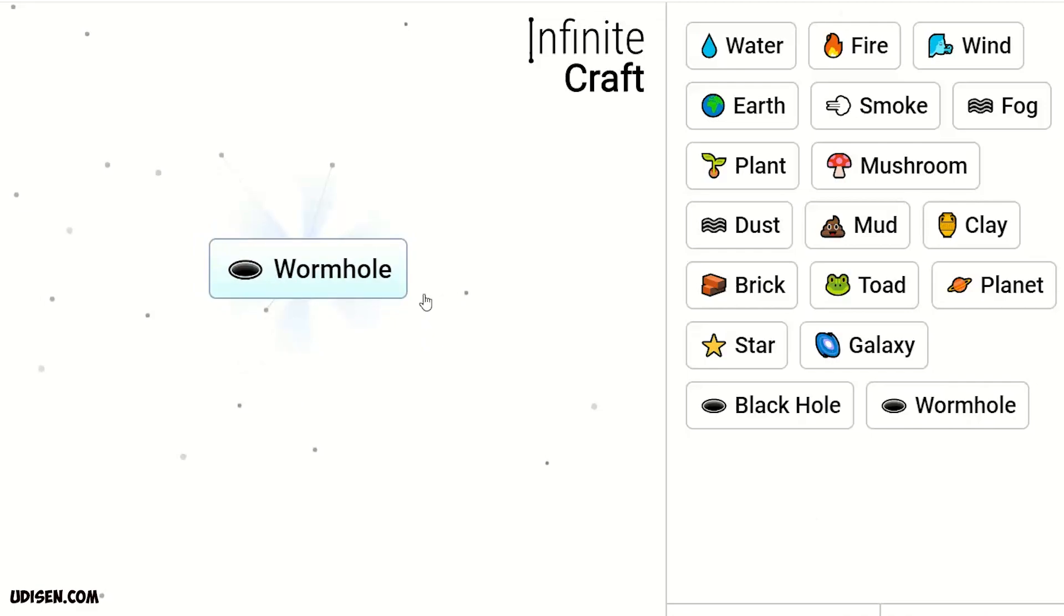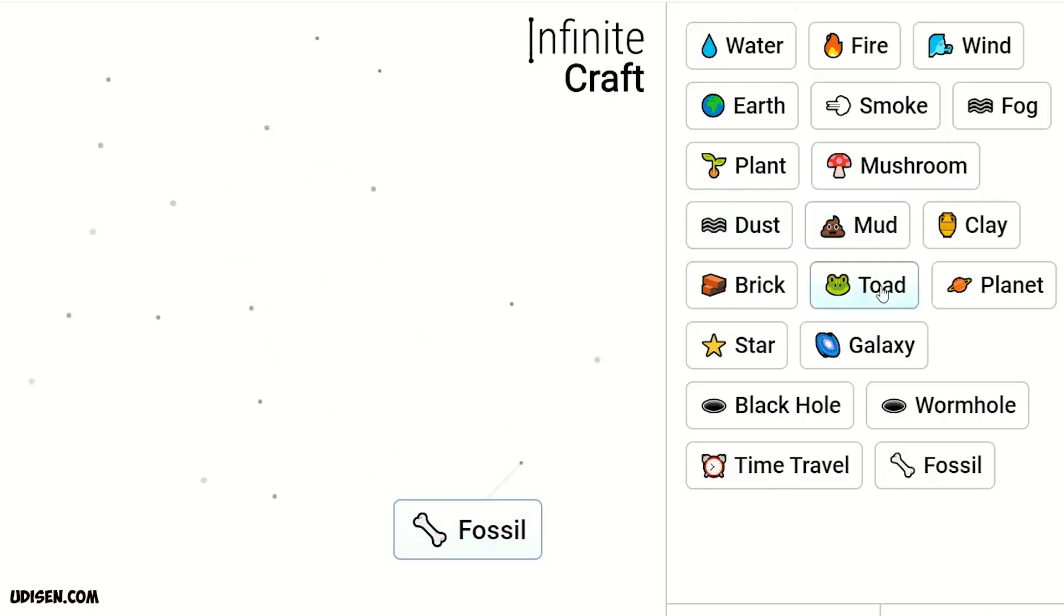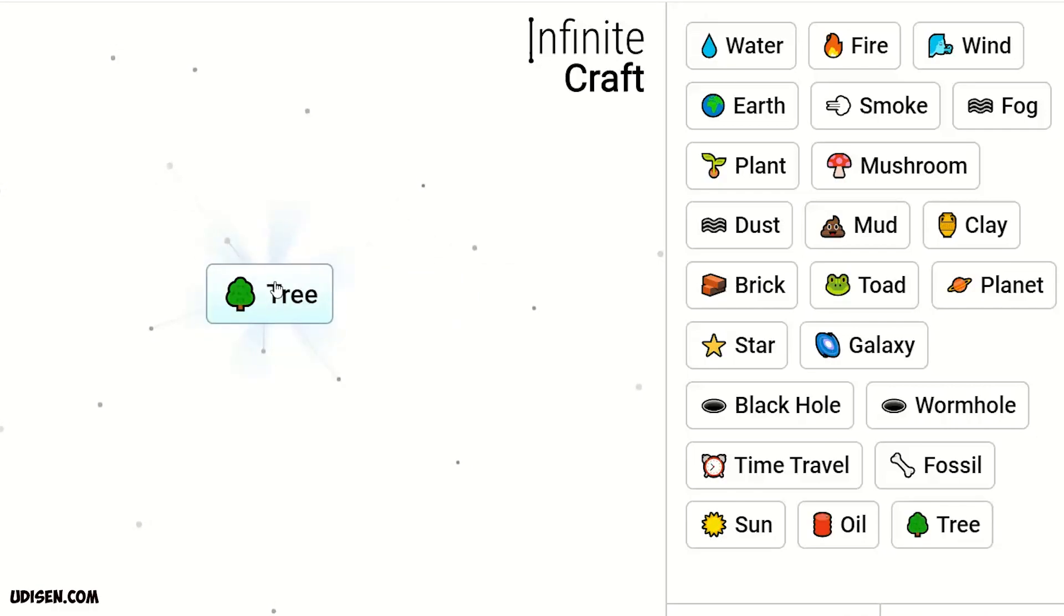Planet and fire makes sun. Sun and fossil makes oil. Leave it here. Then water and elf makes plant. Two plants make tree. Two trees make forest.